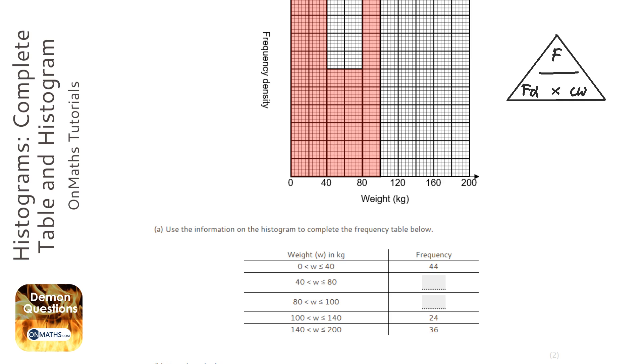So we know the class width, well let's work out the class width for these. That's going to be 40, that's going to be 40, that's going to be 20. And I'm just looking at the distances between the 80 and the 100, so I'm doing 100 take away 80. So the next one is going to be 40 and the last one is going to be 60.